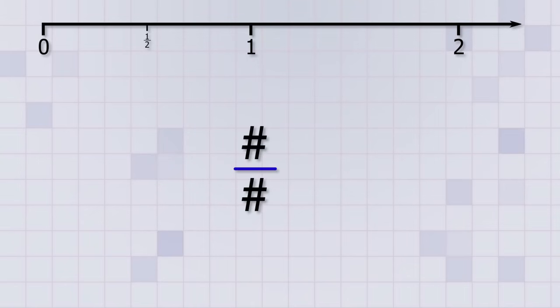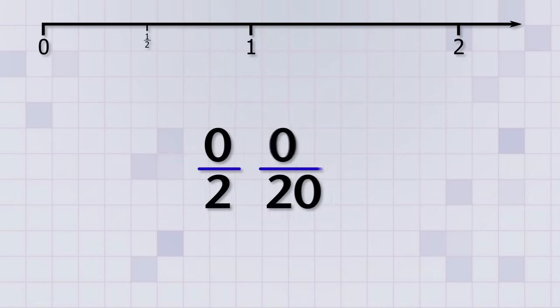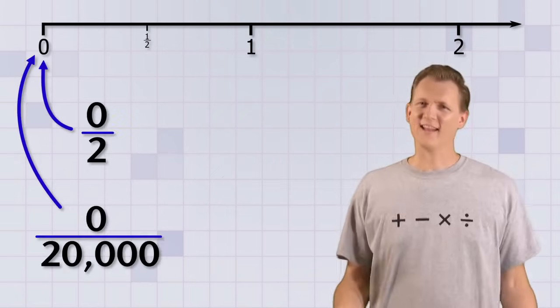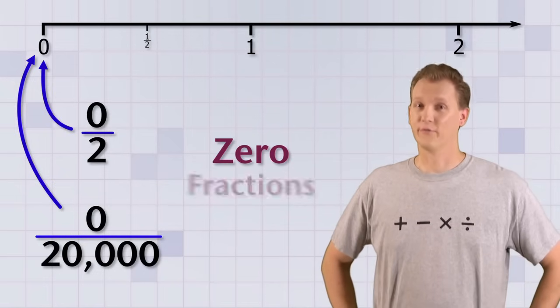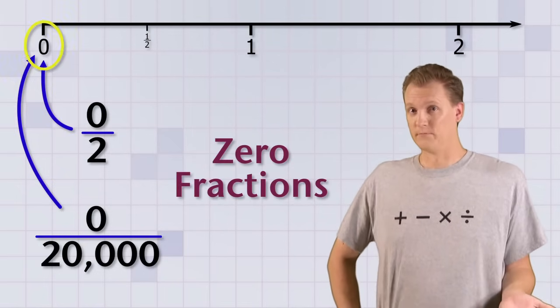The first rule is, if the top number of a fraction is 0, then the value of the fraction is always 0, no matter what the bottom number is. For example, 0 over 2 and 0 over 20,000 are both just 0. I like to call these fractions 'zero fractions' because they equal 0.